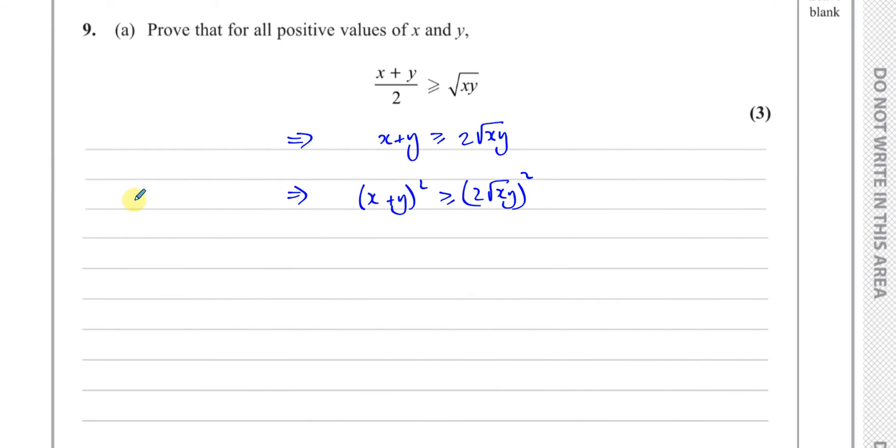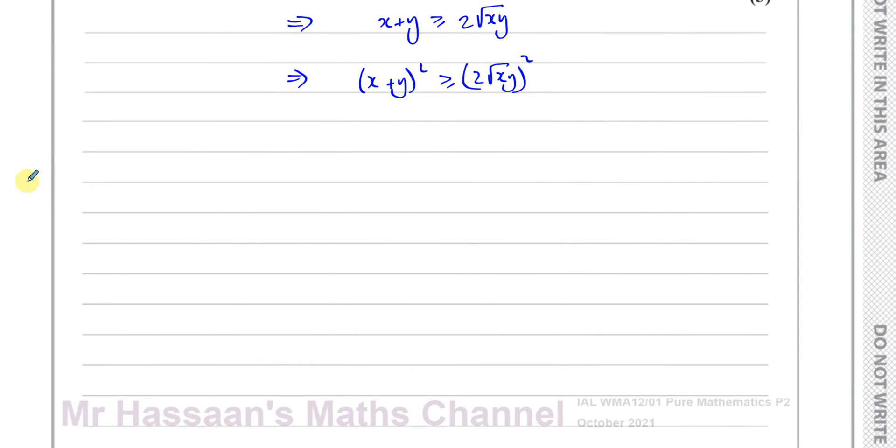So if I square this side, I'm going to get x squared plus 2xy plus y squared. On this side, I'm going to get 4 times xy. And then if I bring everything to one side, I have 2xy minus 4xy, which is minus 2xy plus y squared equals 0. Now, this is a perfect square. I can write this as a factorized form of x minus y all squared.